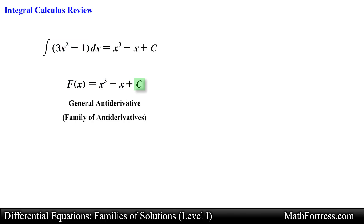This general antiderivative represents the family of all antiderivatives of the function 3x squared minus 1. Notice that each antiderivative would differ by a constant, which means that the graphs of any two antiderivatives are vertical translations of each other.